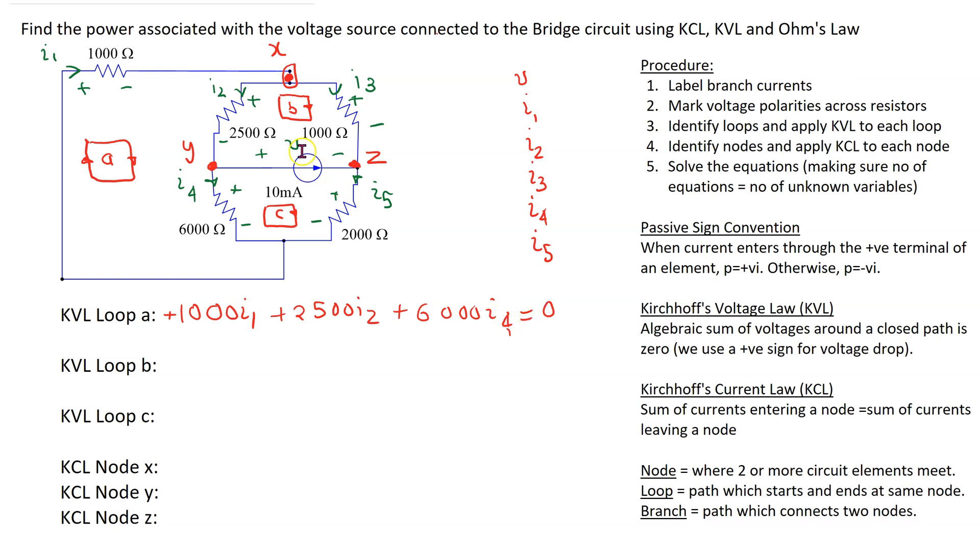Repeating the process for loop B we can start at any component. So let's start here across the 1000 Ohm resistor going from plus to minus is a voltage drop. So this is plus 1000 I3, going from minus to plus is a voltage rise so we get minus V, and then going from minus to plus is another voltage rise so this is minus 2500 I2 equals zero.